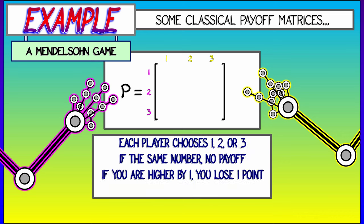If they put out the same number of fingers, there's no payoff. If you put out one more than the other player, you lose one point. If you put out two more than the other player, you win two points.